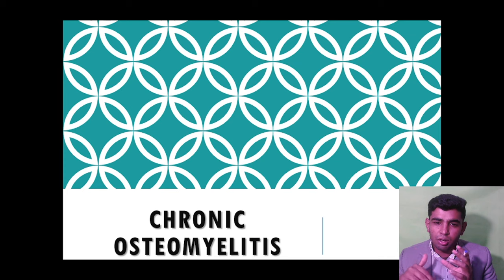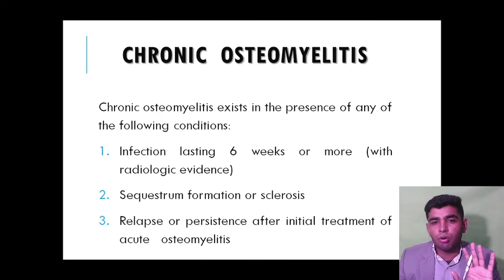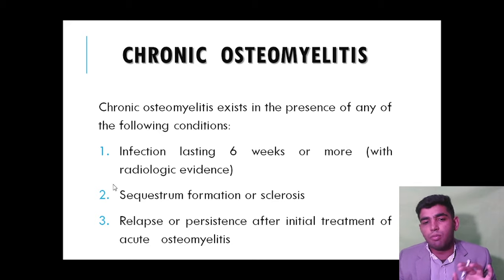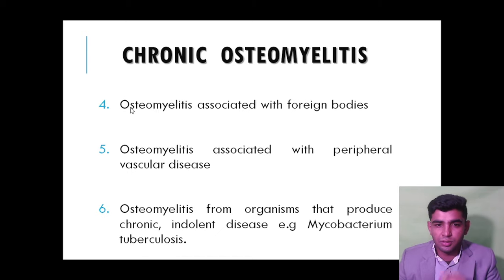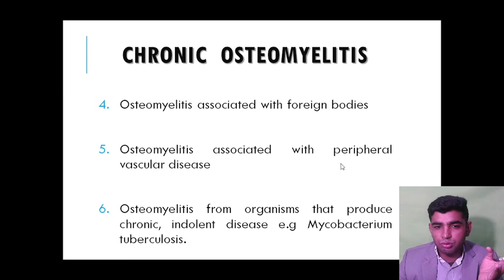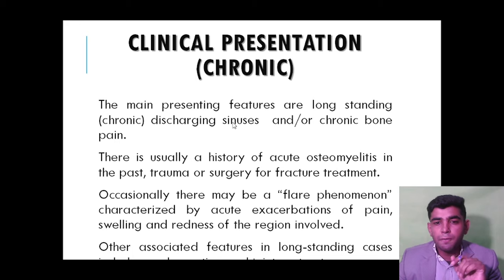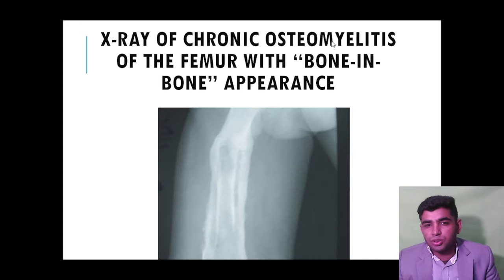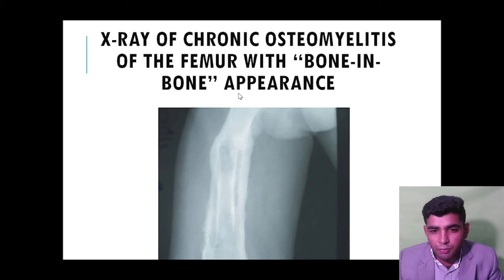Now defining chronic osteomyelitis: it is infection lasting six weeks or more, with radiological evidence. Sequestrum formation and involucrum are present. Osteomyelitis may also be associated with foreign bodies. The classic X-ray finding of chronic osteomyelitis of the femur is bone-in-bone — a bone within a bone — which is the typical example.